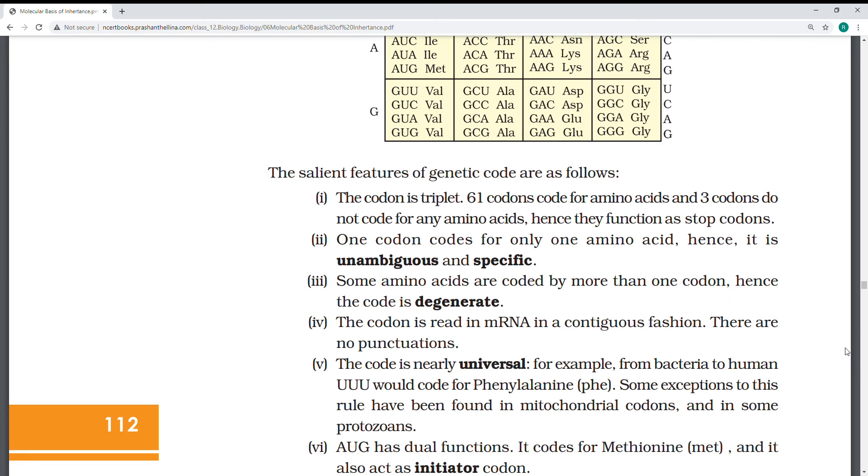One codon codes for only one amino acid. That is called unambiguous, which are specific genetic codons. Some amino acids are coded by more than one codon. They are called degenerate codons.